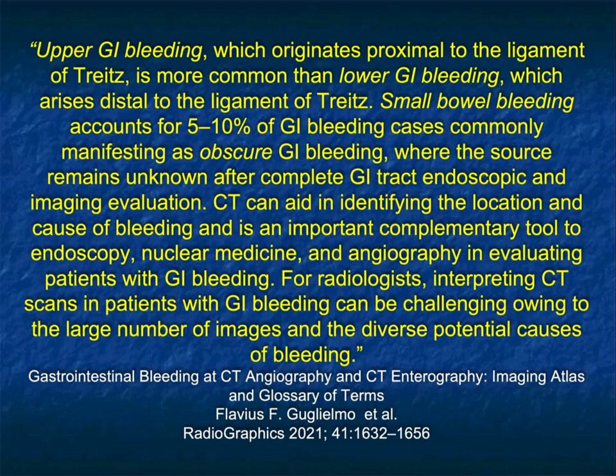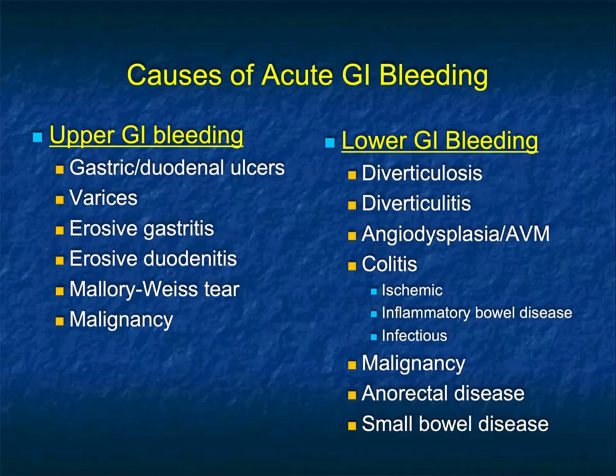CT can aid in identifying the location and cause of bleeding and is an important complementary tool to endoscopy, nuclear medicine, and angiography for evaluating patients with GI bleeding. For radiologists, interpreting CT scans in patients with GI bleeding can be challenging owing to the large number of images and the diverse potential causes of bleeding. CT is very good at this — it's a question of how you address the problem.